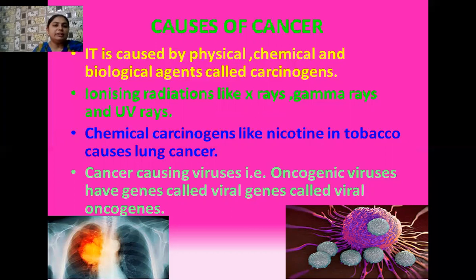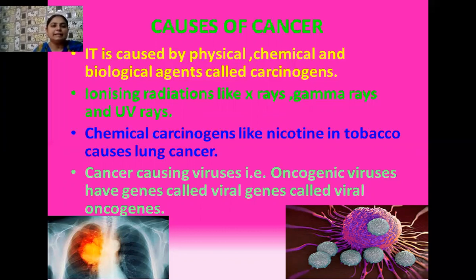Chemical carcinogens: there are certain types of chemicals present in chewing substances. For example, most people in India do cigarette smoking, take bidis, and sometimes chew raw tobacco. In that tobacco, the chemical nicotine is present, and this chemical generally causes lung cancer and throat cancer in humans.